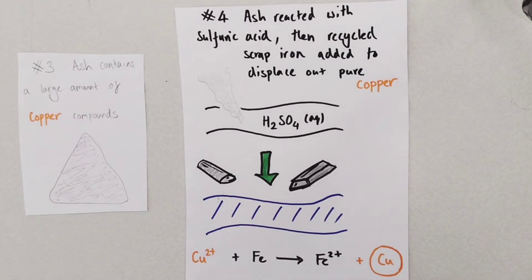Finally we add some sulfuric acid which reacts with the ash, more specifically with the copper compounds in the ash forming copper sulfate. We then add some recycled scrap iron and the more reactive iron will displace the copper from the copper sulfate solution to form pure copper.